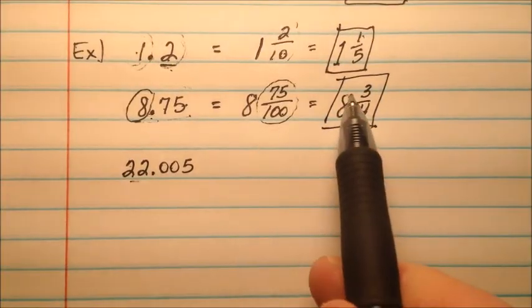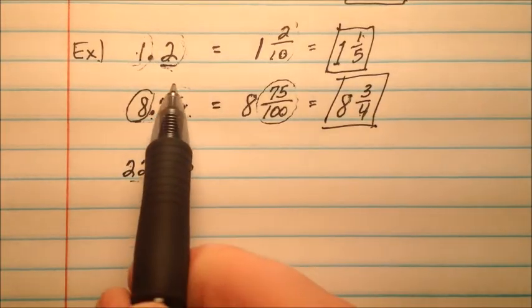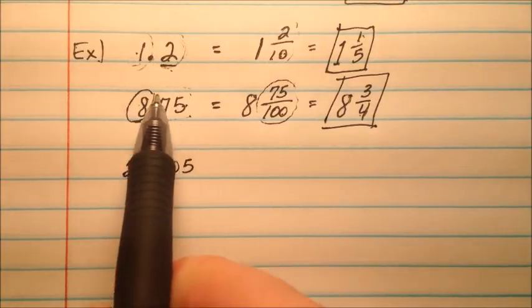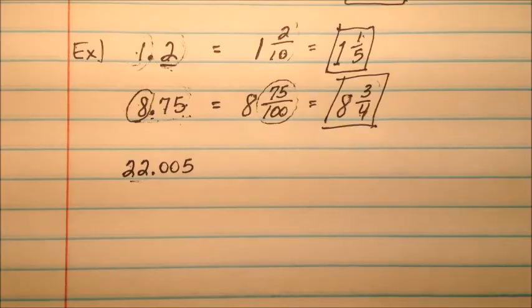In this example, I have 8 and 3 over 4. Just like our decimal portion was 8 and, and then we had a little part, this .75 that ended up reducing and turning into 3 over 4.